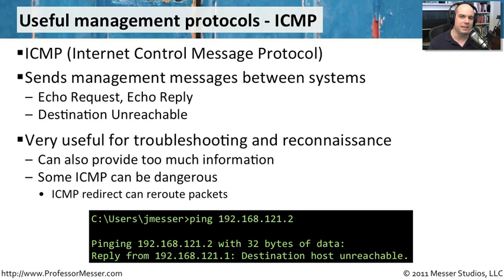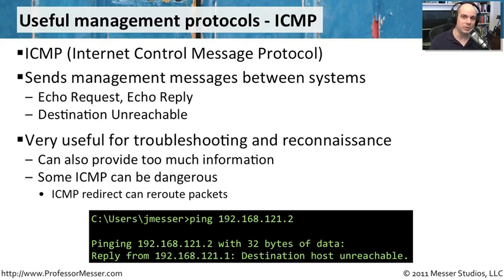There are other methods of ICMP that can redirect different network connections. You could tell a router that a network is no longer located here — it's located somewhere else. That might be a legitimate message, or it may be completely illegitimate — it might be bad guys trying to redirect traffic over to their machines, so usually those are also restricted.